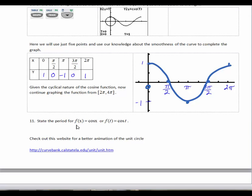Okay, number 11 here. So state the period for f of x equals cosine x or f of t equals cosine t. And we already saw that cosine repeated one cycle, or completes one cycle over 2π radians.